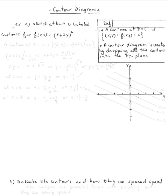The topic is contour diagrams. Let's do this example: sketch at least four labeled contours for f of x, y equal x plus 2y squared. The definition says a contour at z equal c is the set of all points (x, y) such that f(x, y) equals c. In other words, a contour at z equal c is the set of all (x, y) such that x plus 2y squared equals c.